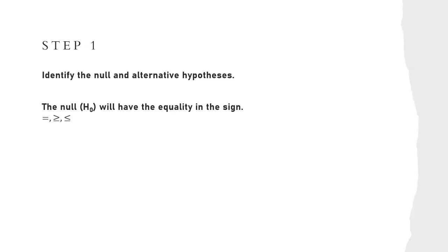The null hypothesis, or H sub zero, will always have the equality in its sign. So that will always be the one that's equal to, or greater than or equal to, or less than or equal to. That will always be your null hypothesis. Your alternative is the opposite of the null. So not equal to, or just less than or greater than.